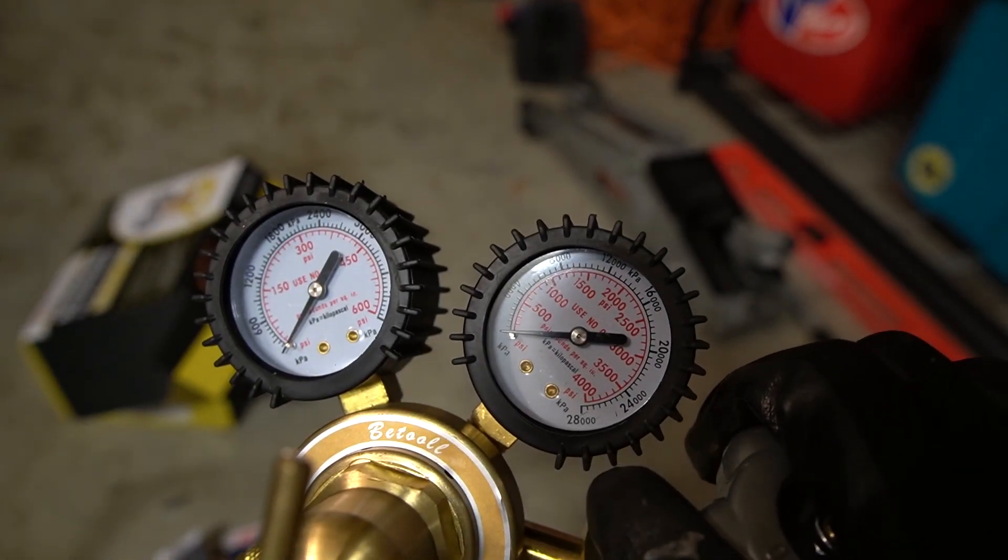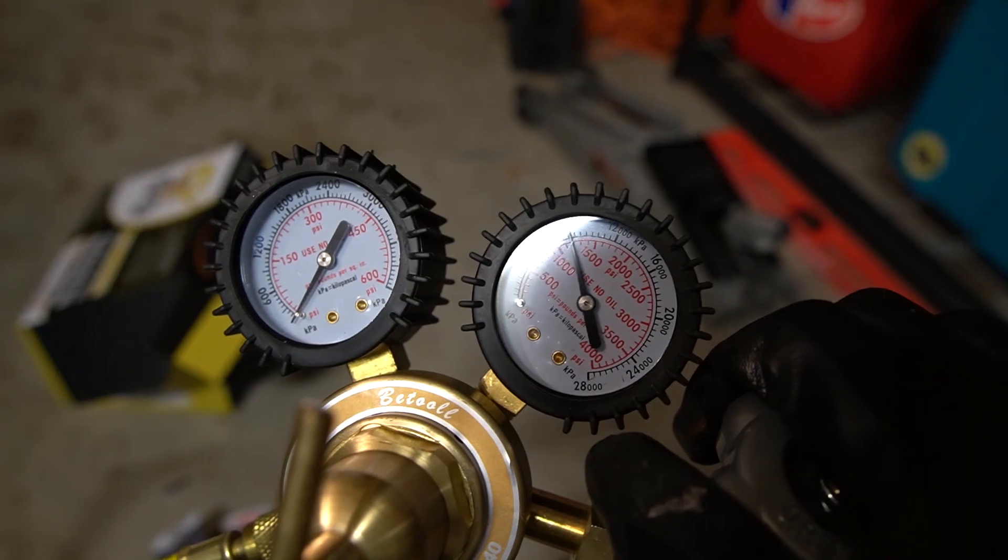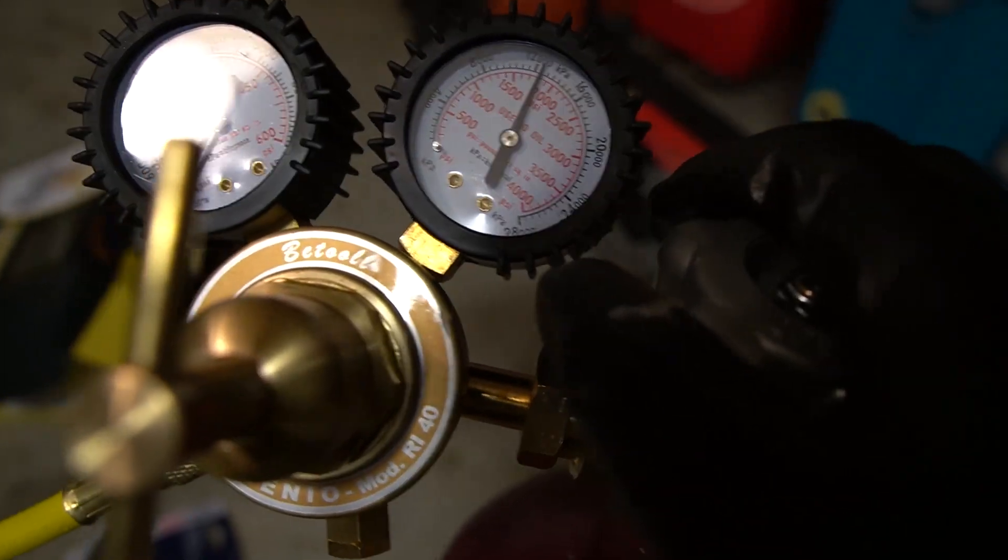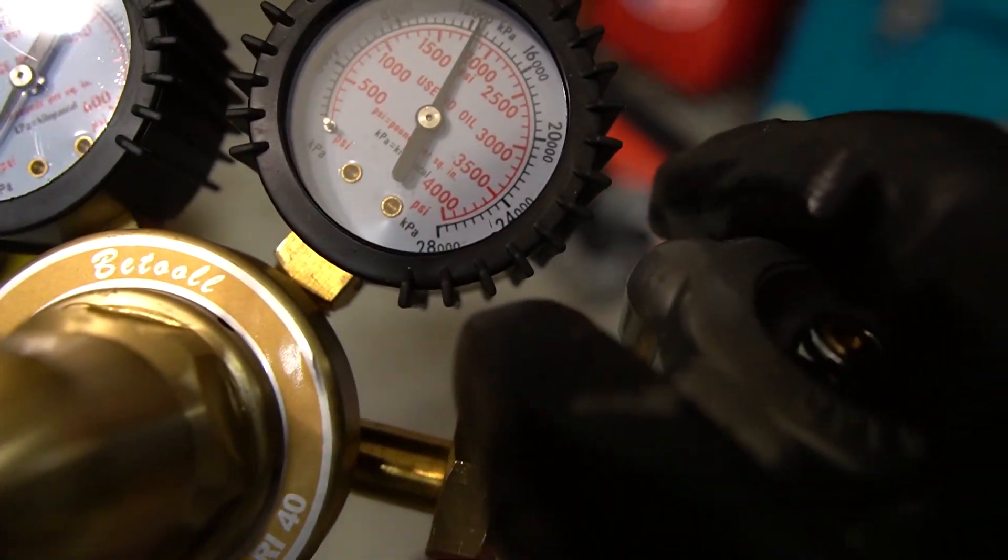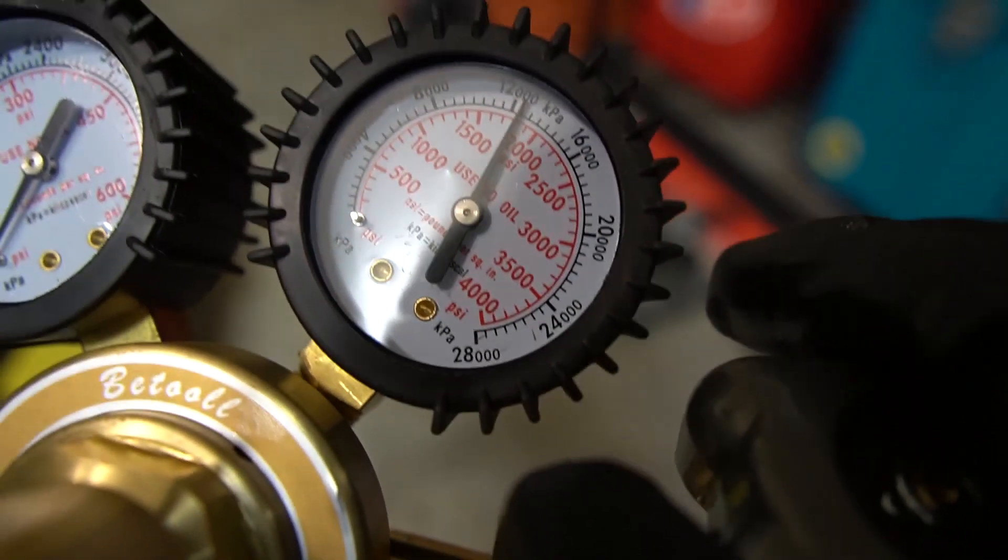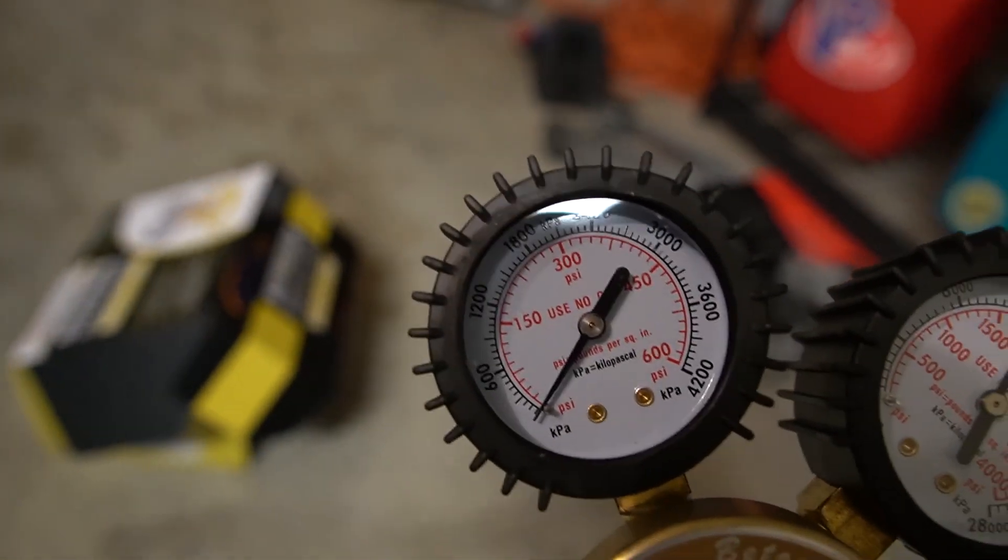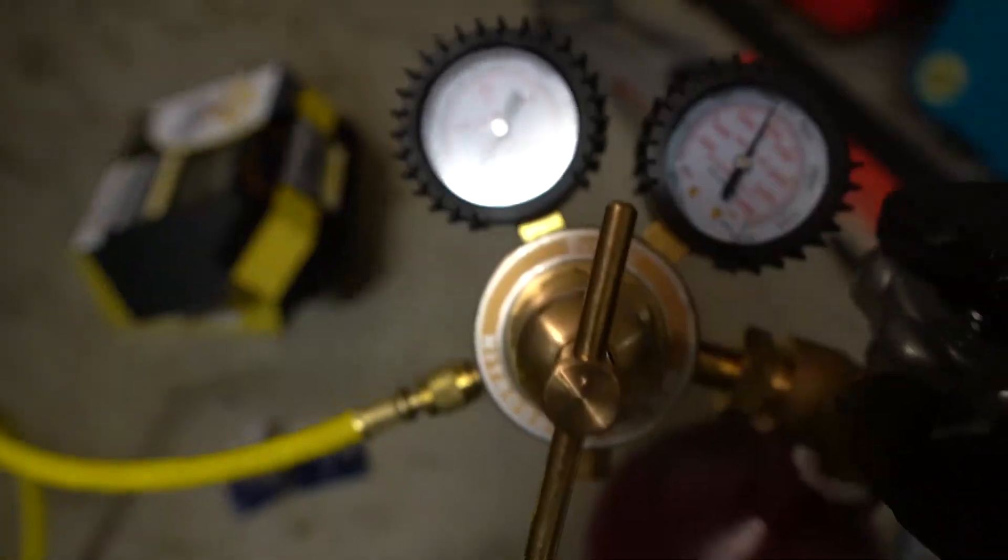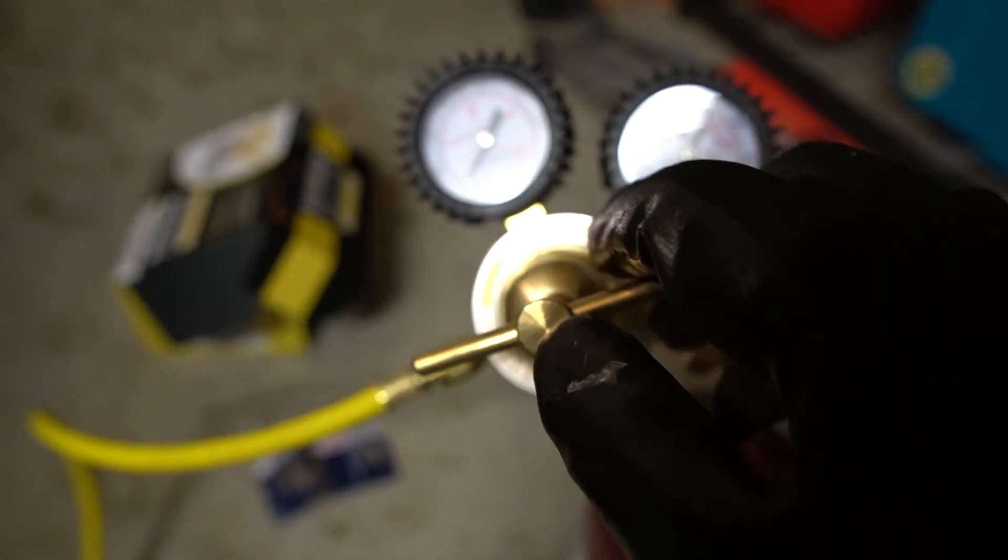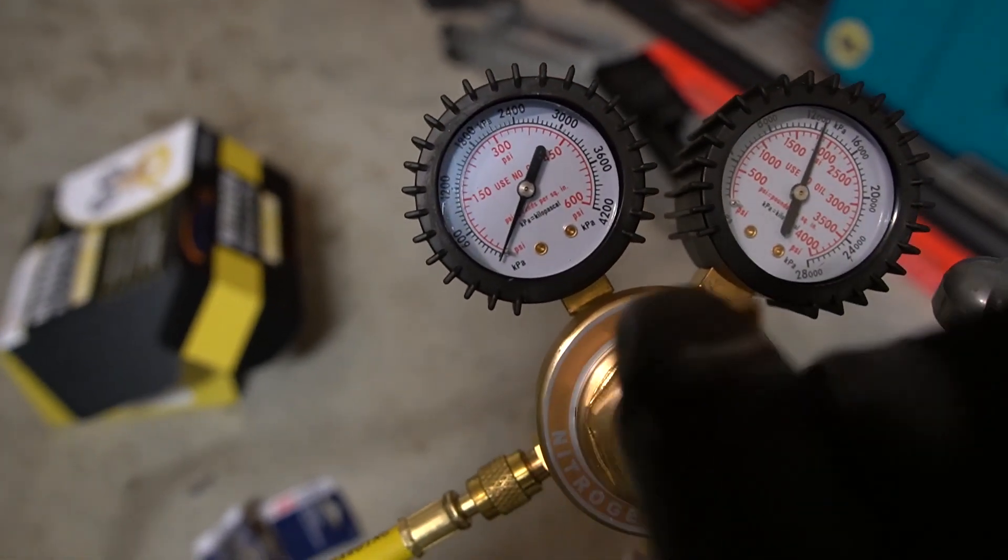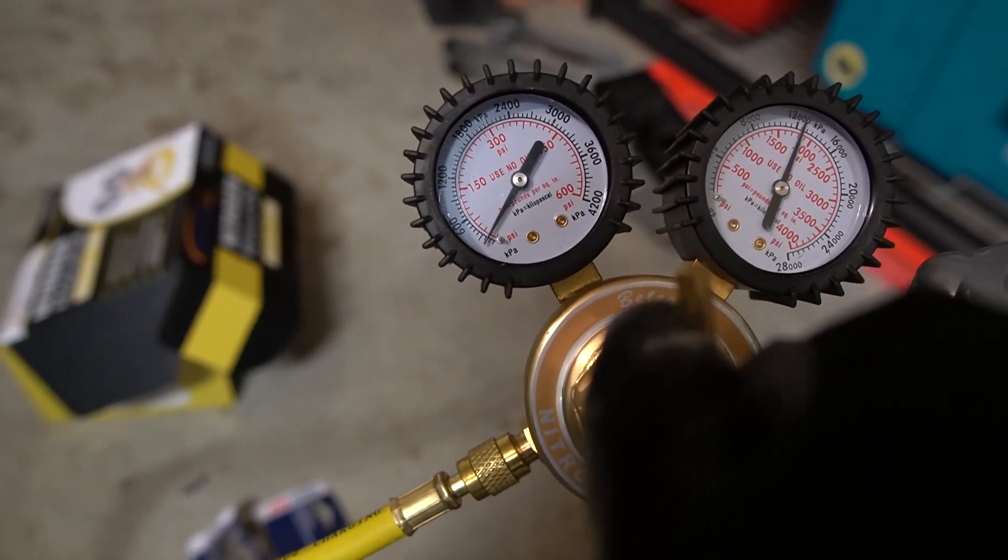As you open it—okay, so the valve on the tank is open and it's sitting right at about 1800 PSI. But you'll notice on this side it's at zero right now, and that's because we have this valve closed. So next what you want to do is open this valve. To open it, you're going to turn it clockwise, and as you open this, you'll notice that the PSI is going to go up.